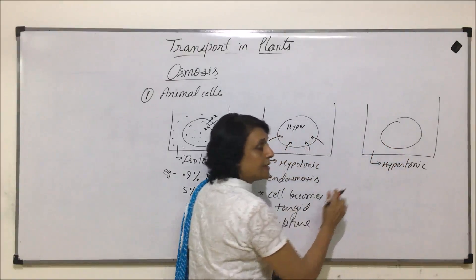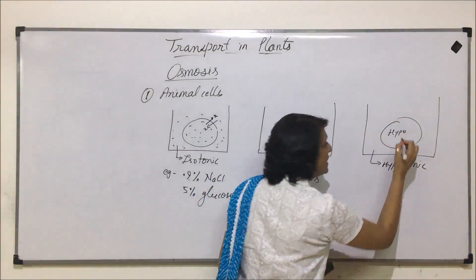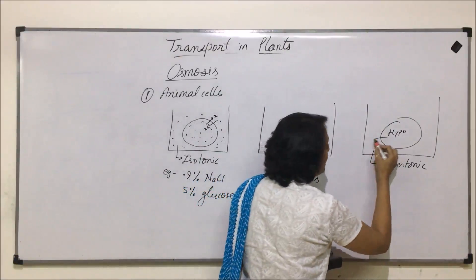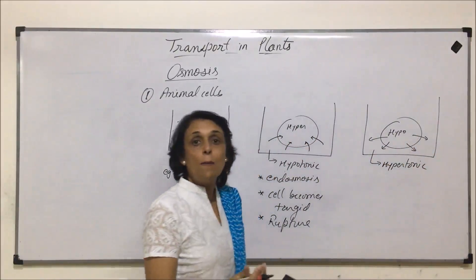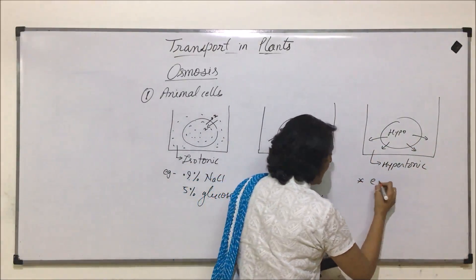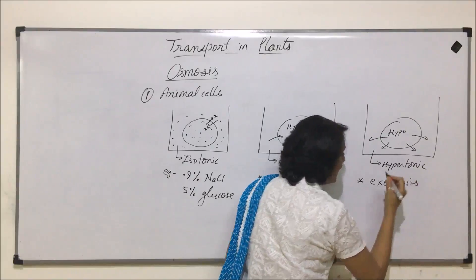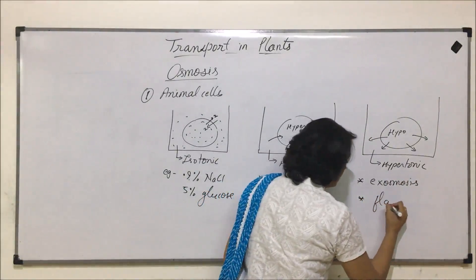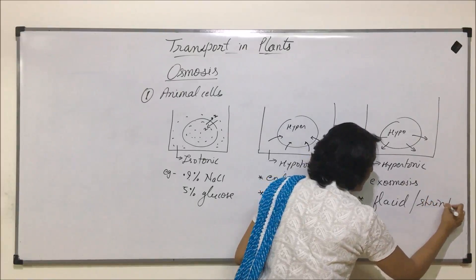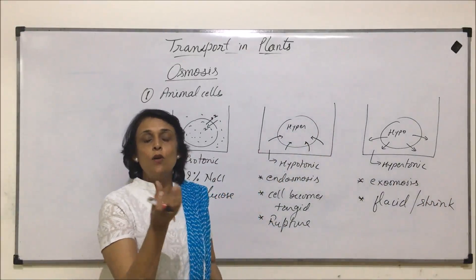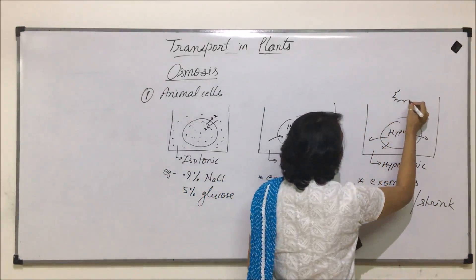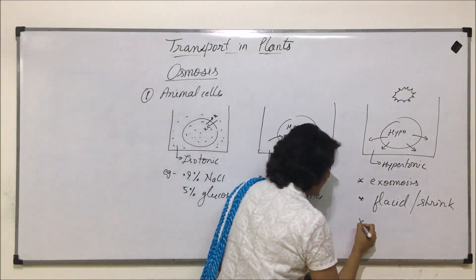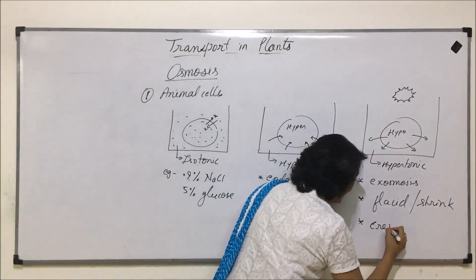If the cell is placed in a hypertonic condition, that means inside the medium is hypotonic. Osmosis takes place from hypo to hyper, so water is going to come out of the cell — that means exo-osmosis will take place. The cell will shrink; such cells are known as flaccid cells. It will become flaccid or shrink, and after shrinking it will look crenated. In case of RBC or animal cell, we call it crenated — the cell gets crenated.